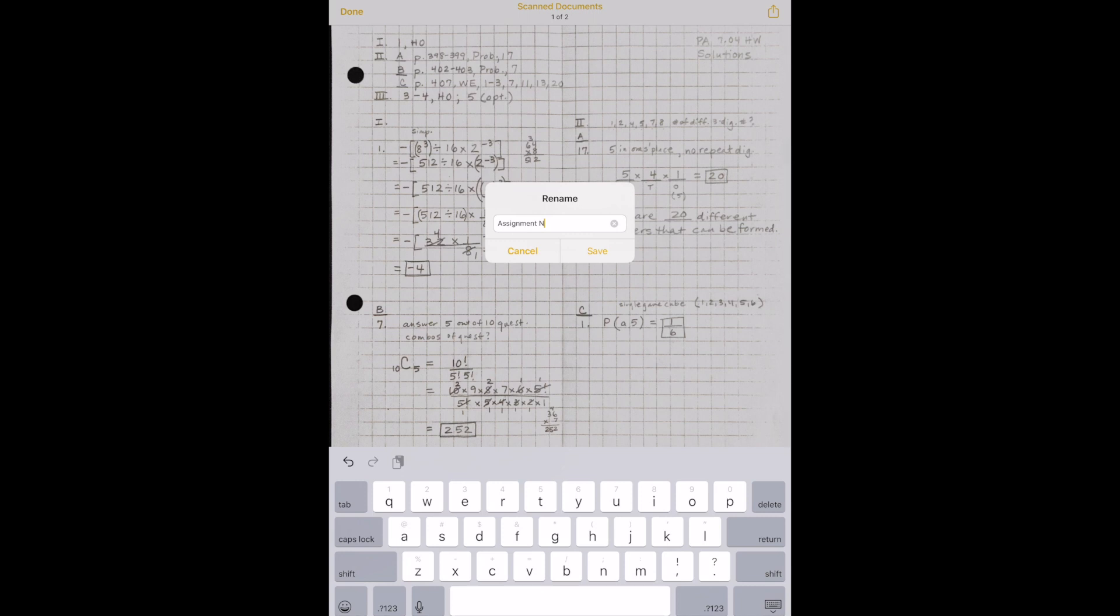So it'll be the assignment number, whether it's a homework or a classwork, so the assignment name of the homework, then they'll put a space, then a dash, then the period that I have them, then a space, then a dash, then another space, and then their first and last name.